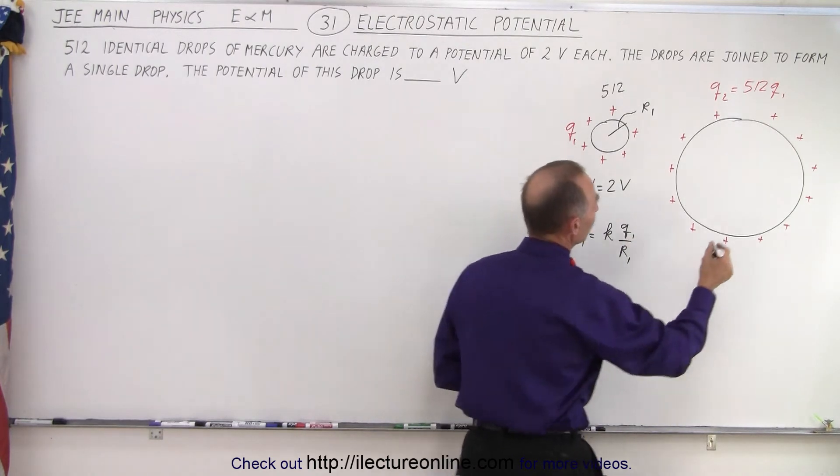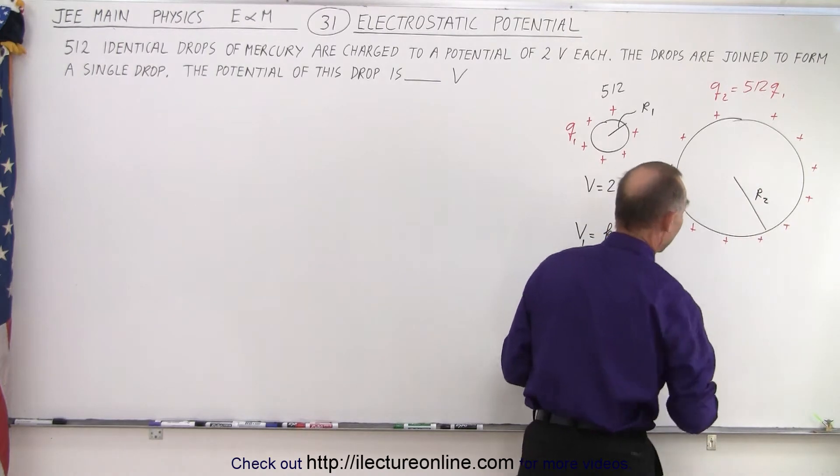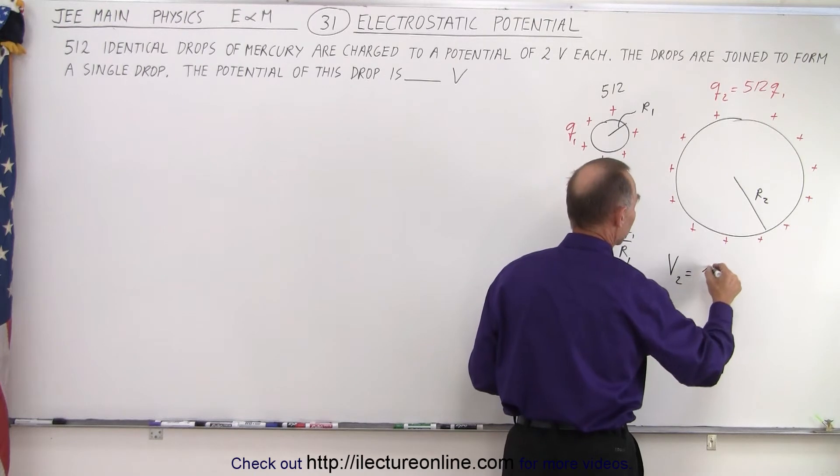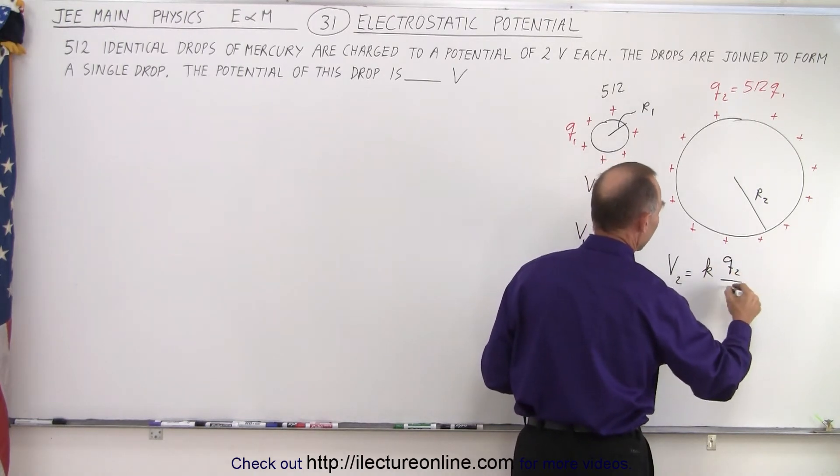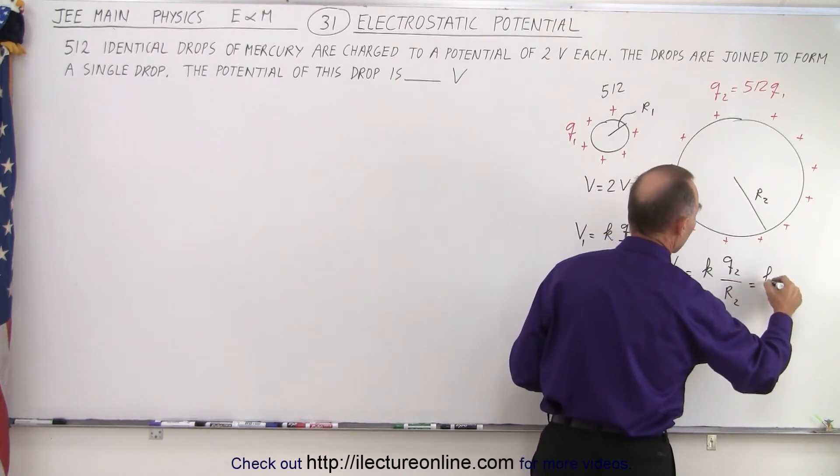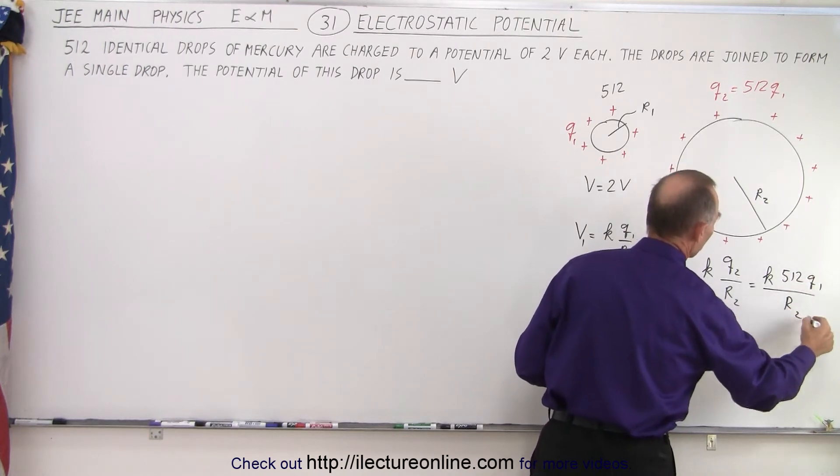And notice that this is now going to have a different radius, call it R2. And so we know that the potential in that big sphere, V2, is going to be equal to K, which is simply a constant, times Q2 divided by the new radius. And of course, Q2 is going to be K times 512 Q1 divided by R2.